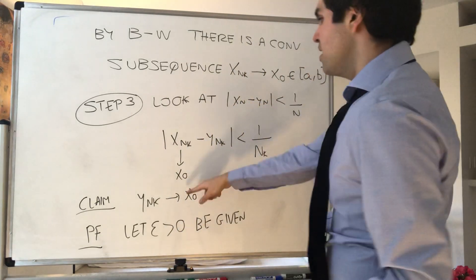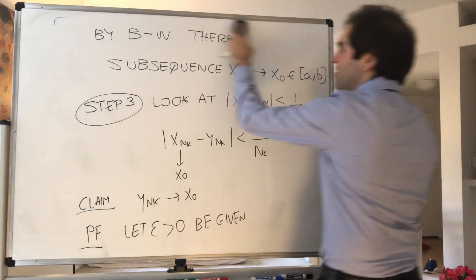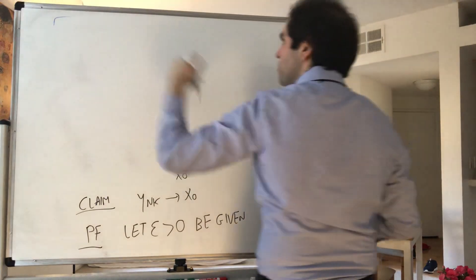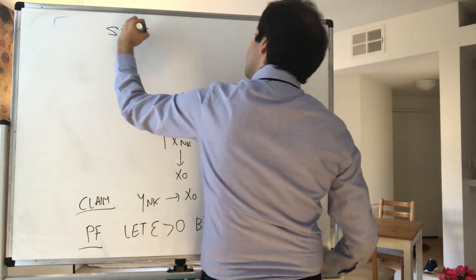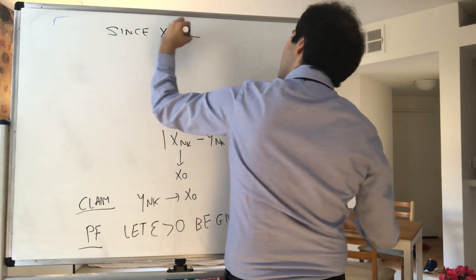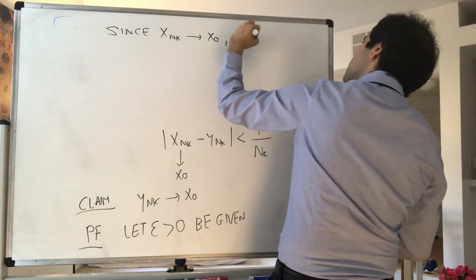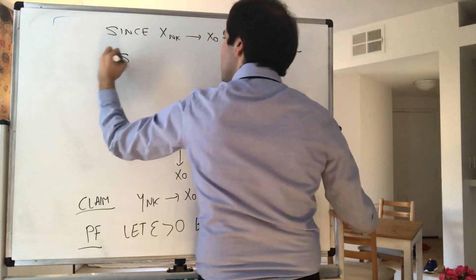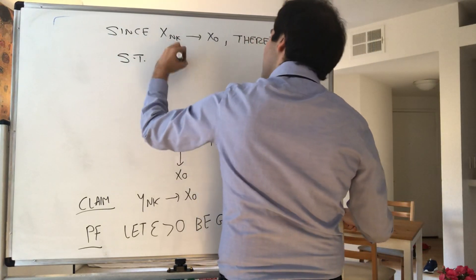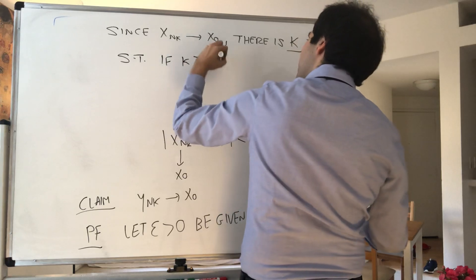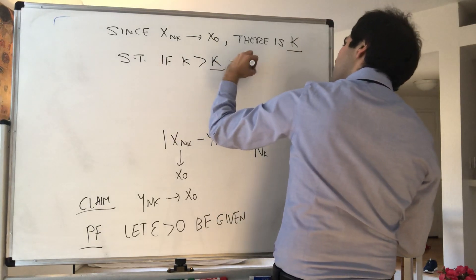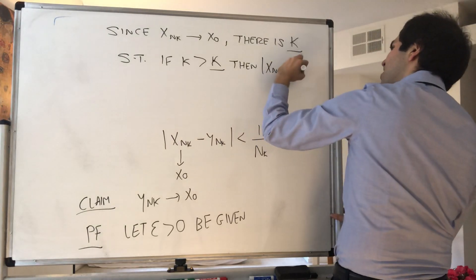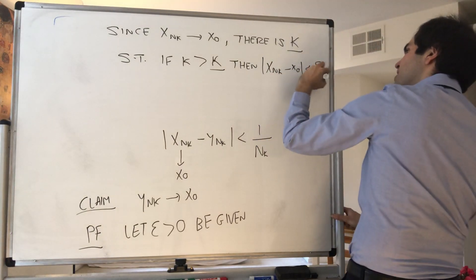Then the point is, since x_nₖ goes to x₀, well, eventually they're close together. So since x_nₖ → x₀, we know that there is capital K such that if k > K, then the difference |x_nₖ - x₀| < ε/2, because we have two terms.